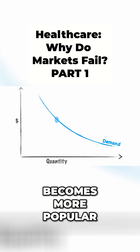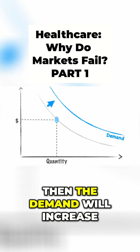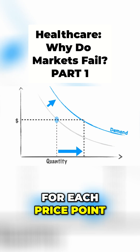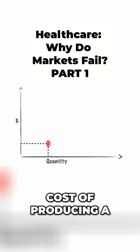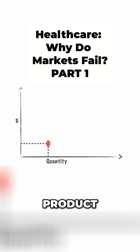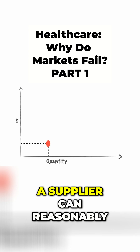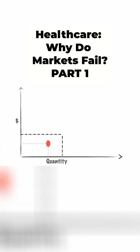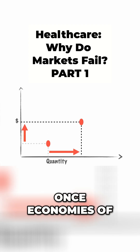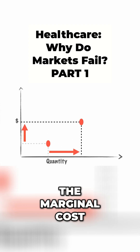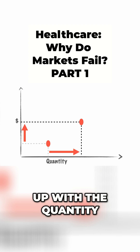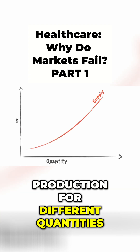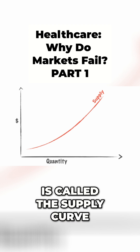And if that product suddenly becomes more popular, then the demand will increase, and at the new demand, a higher quantity will be purchased for each price point. It's also true that the cost of producing a product — which is the minimum amount that a supplier can reasonably sell it for — is dependent on the quantity that gets produced. Once economies of scale have been exhausted, the marginal cost of production goes up with the quantity produced. And this marginal cost of production for different quantities is called the supply curve.